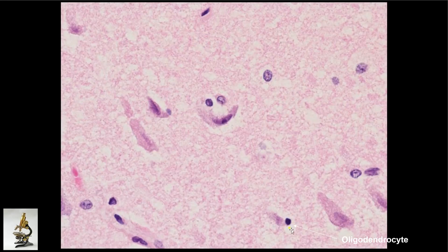This is a normal oligodendroglial cell. This slide has a little smiley face here, but this is a normal oligodendroglial cell under light microscopy using the H&E stain. It doesn't look like much, but they have a lot of important functions, one of them being to myelinate neurons.